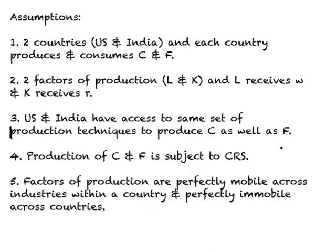The third assumption in the HOS model — and this is important — is that the U.S. and India have access to the same set of production techniques. There is no hidden advantage; one country doesn't have an advantage in terms of technology. Both countries have access to the same set of production techniques to produce clothing as well as food.